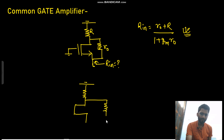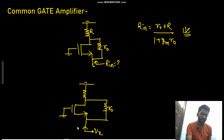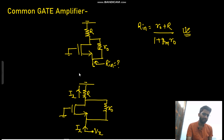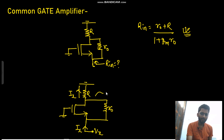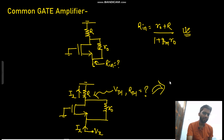This will be a completely different approach from what you have seen before. Here we will consider a test voltage Vx and get a corresponding current Ix. This Ix current flows through the resistance R as well — it goes into this network and comes out. So Ix is also flowing through R.